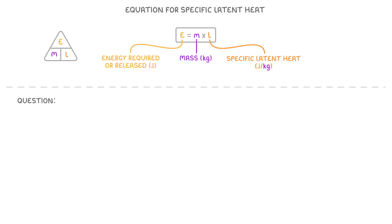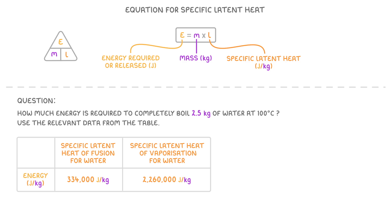So a typical question could be something like, how much energy is required to completely boil 2.5 kilos of water at 100 degrees Celsius? Use the relevant data from the table. Well, as we're boiling the water, we're going to need to use the specific latent heat of vaporization value, as that's the one that refers to boiling. So we just do 2.5 times 2,260,000, which gives us 5,650,000 joules, or 5,650 kilojoules.